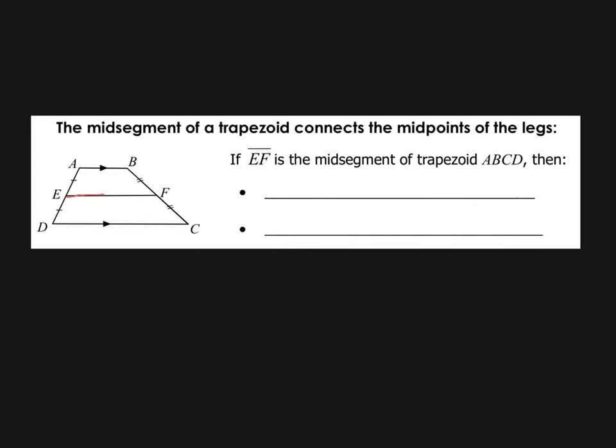Well, a mid-segment is this segment right here, EF, which is in the middle of the trapezoid. So we call it the mid-segment because it's in the middle there, and it connects the midpoints of the legs. So point E is the midpoint of AD, and point F is the midpoint of segment BC. And some interesting stuff happens when you have the mid-segment of a trapezoid.